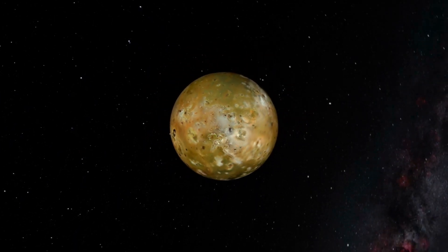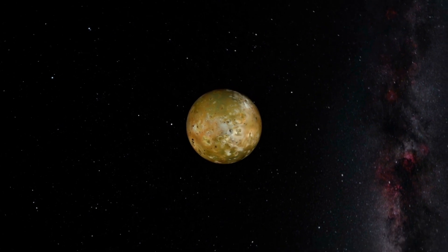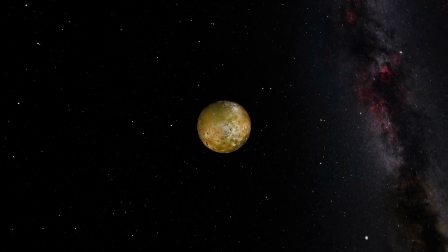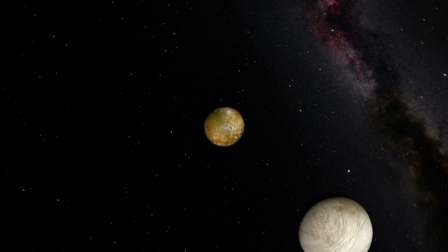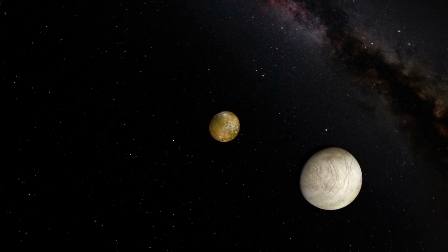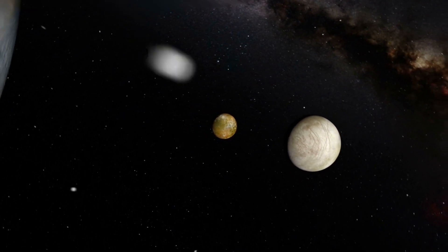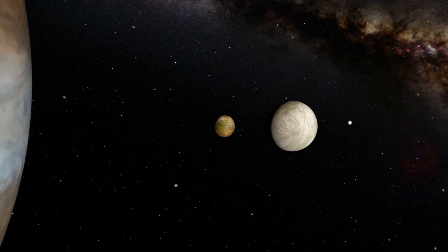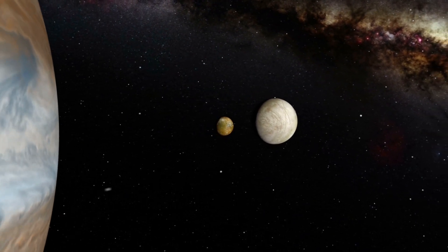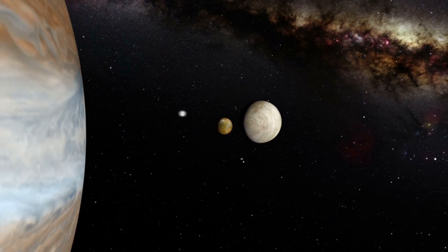Larger planets such as Jupiter and Saturn have many moons. Here we can see Io which is the most volcanically active body in the solar system as well as Europa which is likely to be the best place to look for environments that could support life. Both of these are moons of the planet Jupiter.